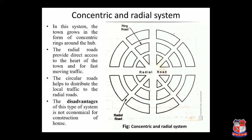The circular road helps to distribute local traffic to the radial roads. This system is found to be more useful for the economic expansion of the town, especially when the town has central features like markets or public buildings. The disadvantages of this system are: first, it is not economical for construction of houses; second, the plots are trapezoidal in shape, causing a lot of wastage of space.